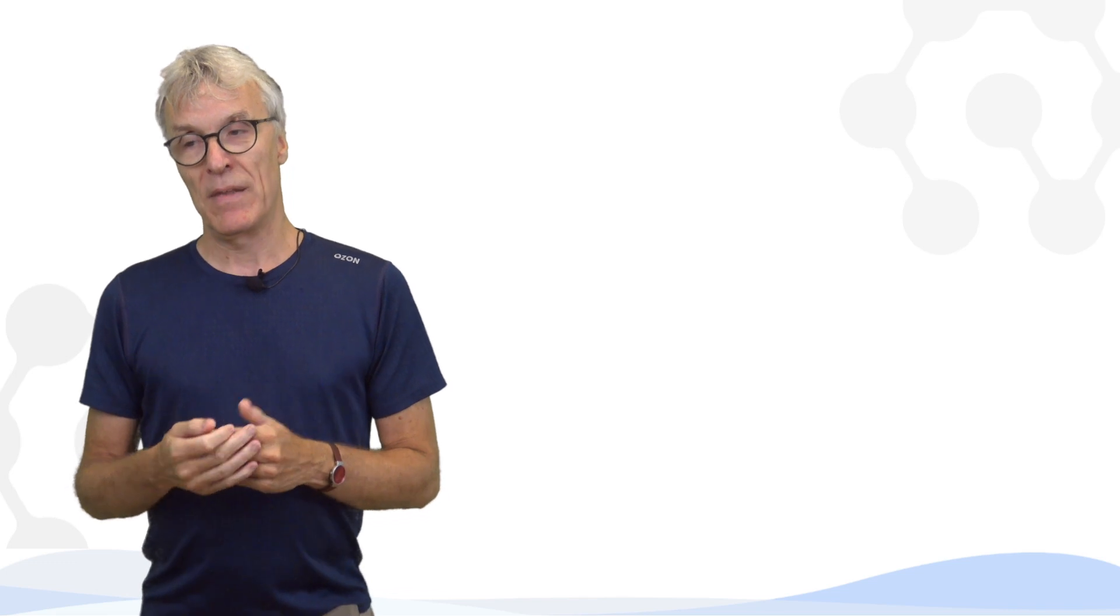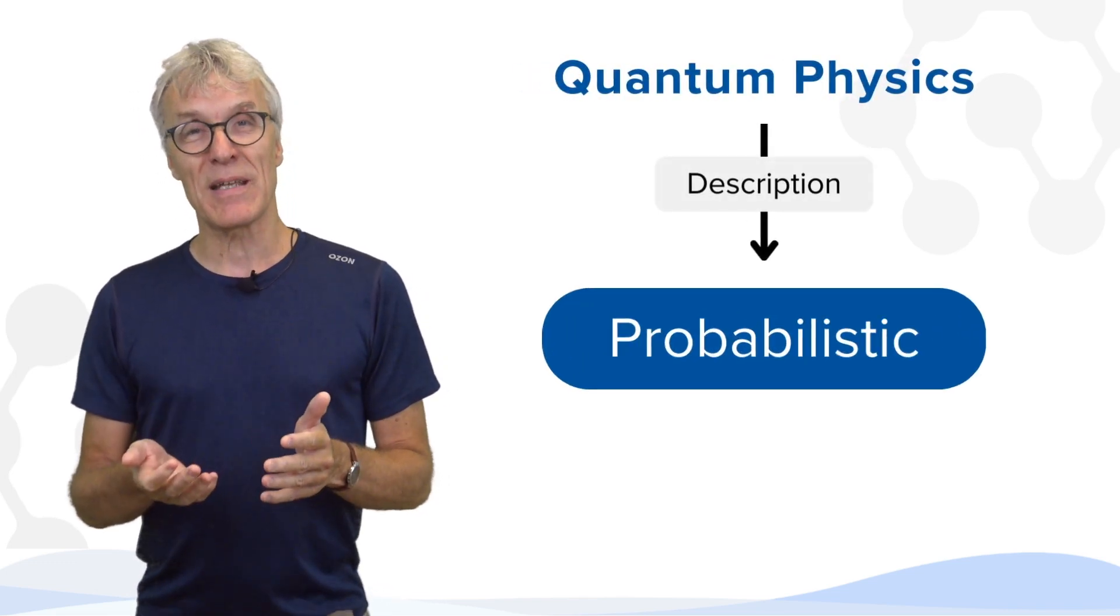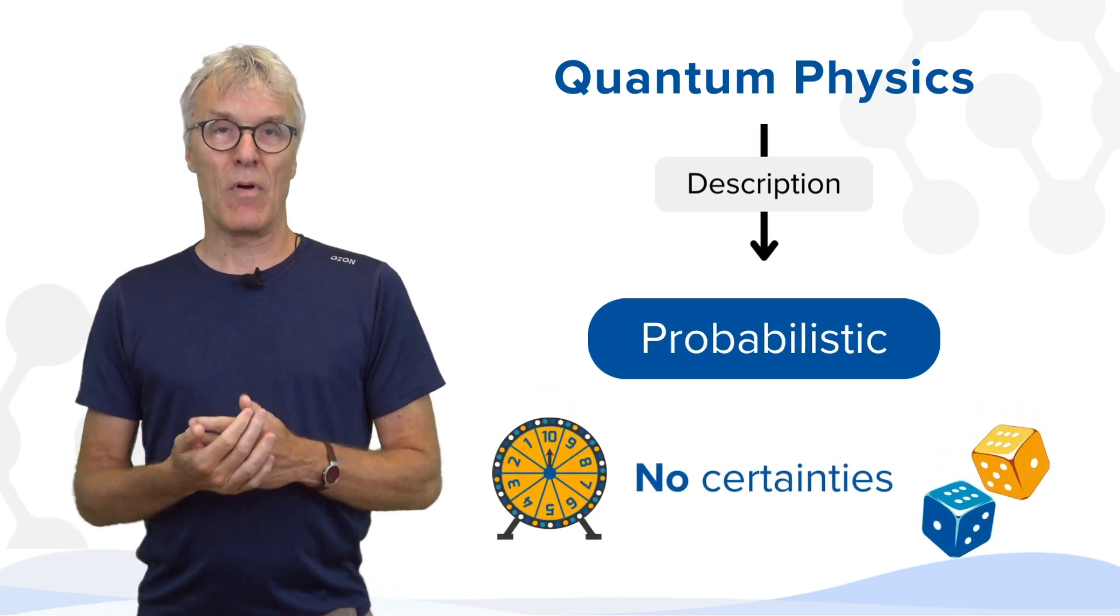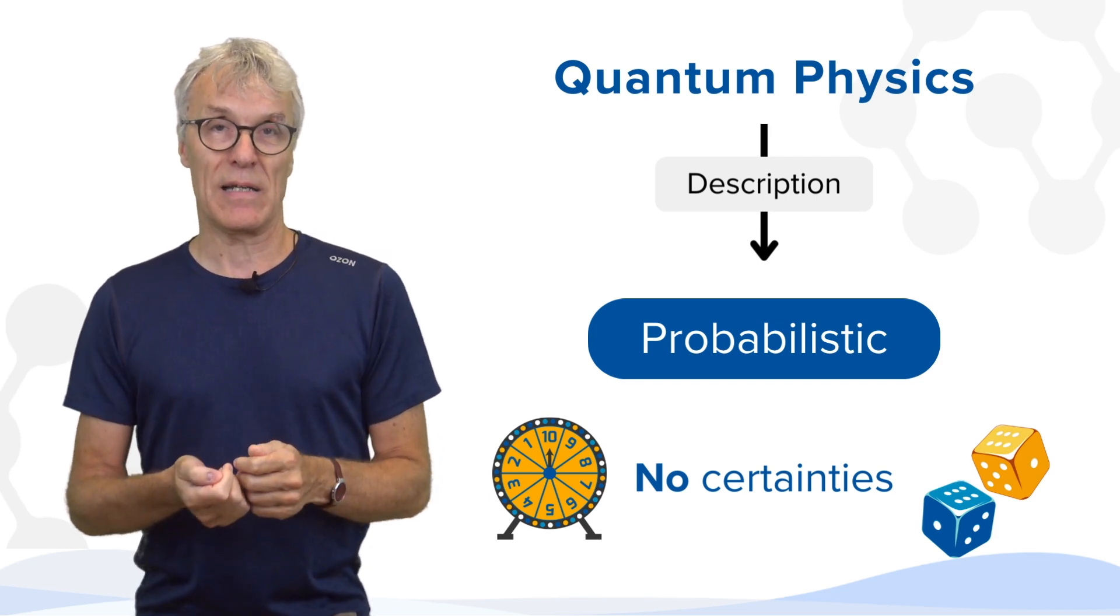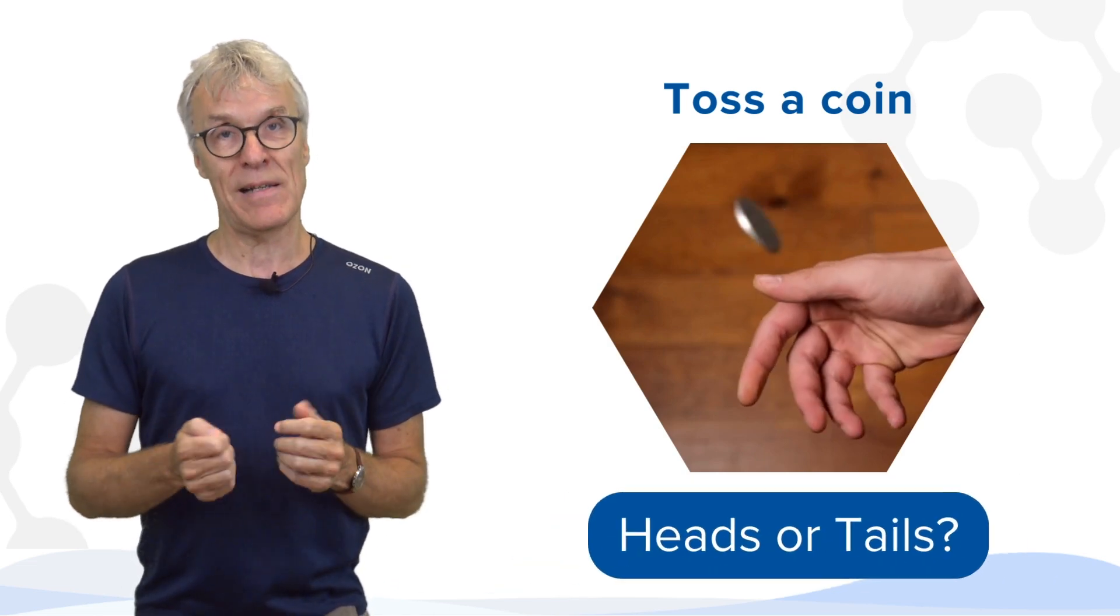So let me tell you one very important thing, namely that in quantum physics, the description is a probabilistic one. Things are not given with certainty, they're given with probabilities. So if you know not exactly what's going to happen if you do an experiment on a single particle, if you toss a coin, you don't know if it's going to be heads or tails.